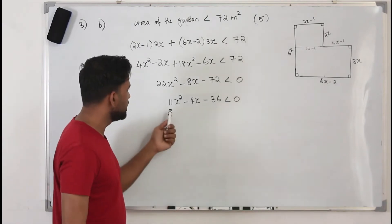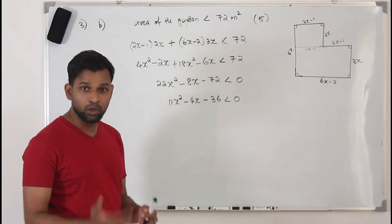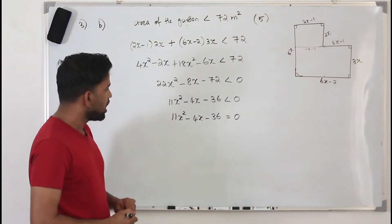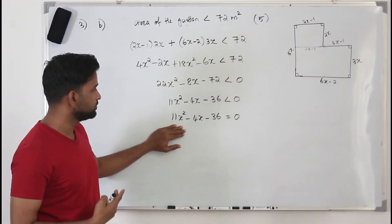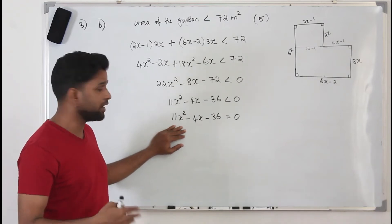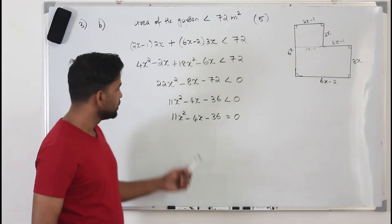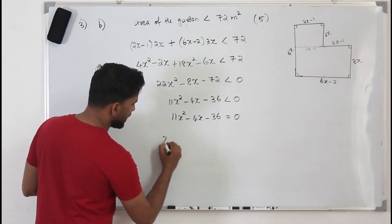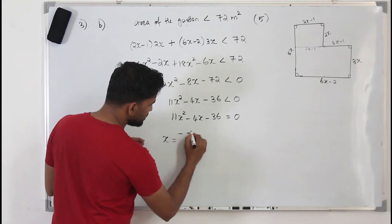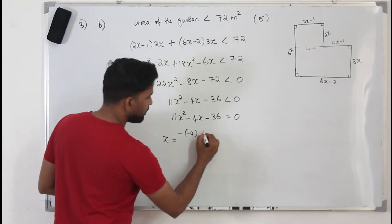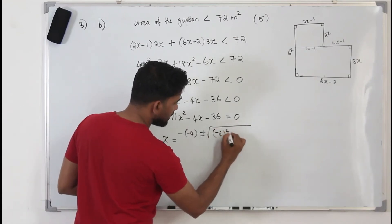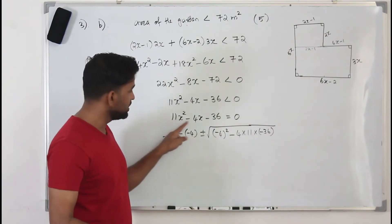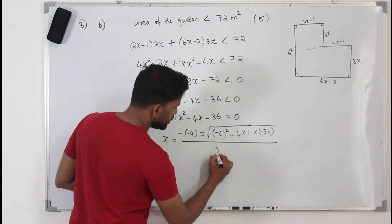To solve the quadratic inequality, first treat it as an equation: 11x squared minus 4x minus 36 equals 0. Solve by any method — factorization, completing the square, or the quadratic formula. I'll use the formula: x equals minus b plus or minus square root of b squared minus 4ac, all divided by 2a. Here a = 11, b = minus 4, c = minus 36.